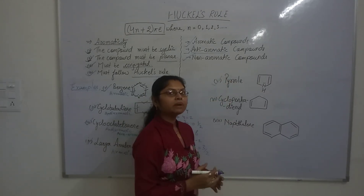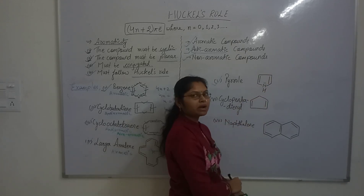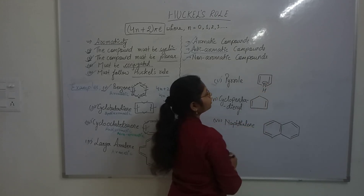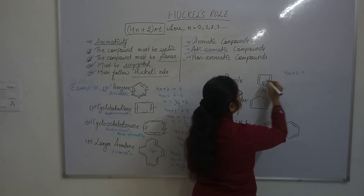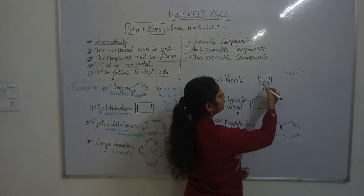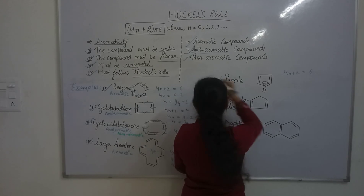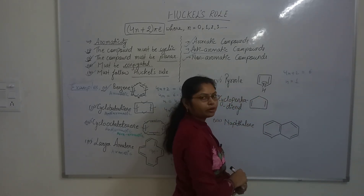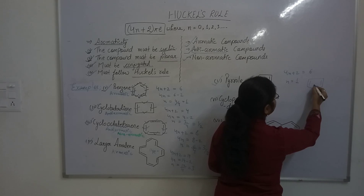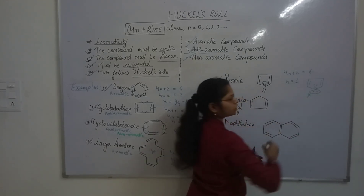Let us discuss pyrrole. Pyrrole is a well-known heterocyclic compound. The compound is cyclic, planar because all atoms are sp2 hybridized, and conjugated. Calculating Hückel's rule: it has 2 pi bonds meaning 4 pi electrons, plus the lone pair of electrons on nitrogen which is also involved in conjugation, giving a total of 6 pi electrons. For (4n + 2) = 6, n = 1, so pyrrole is also an aromatic compound.